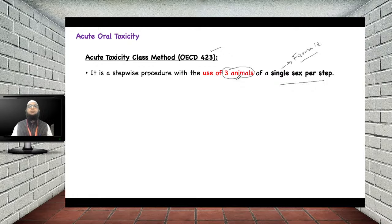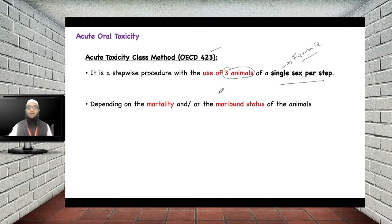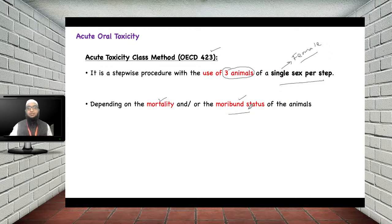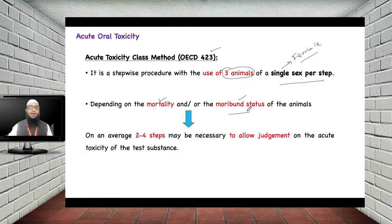Depending on the mortality or morbid status of the animal in each step, on average two to four steps may be necessary to allow judgment on the acute toxicity of the test substance. Mortality means death of the animal; morbid status means the animal is sick and showing signs and symptoms of toxicity even without death, which is also considered a toxic effect.